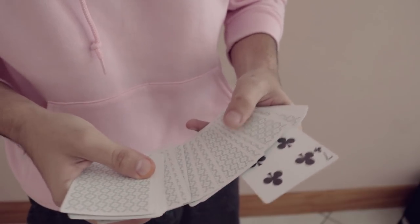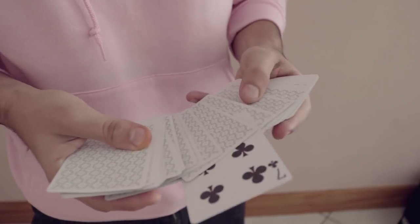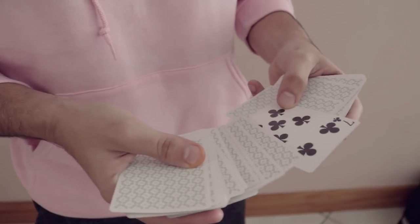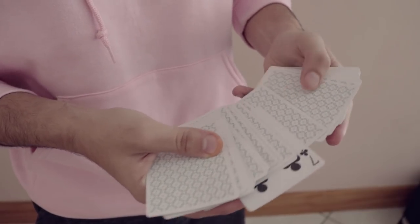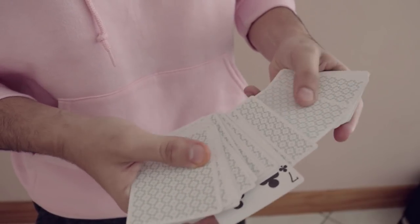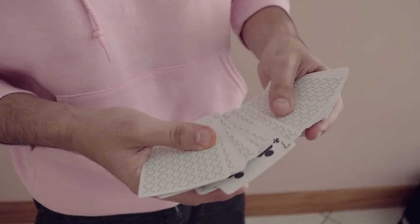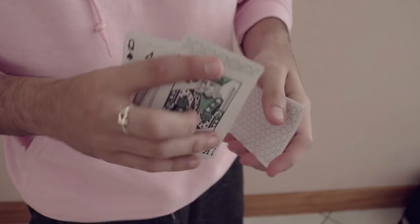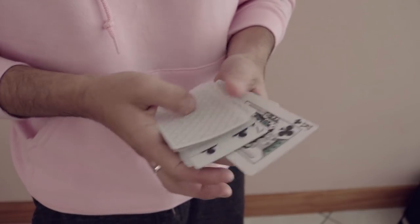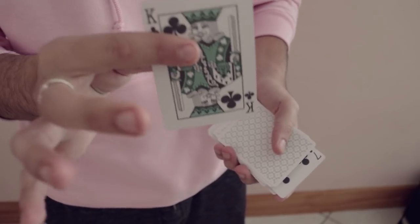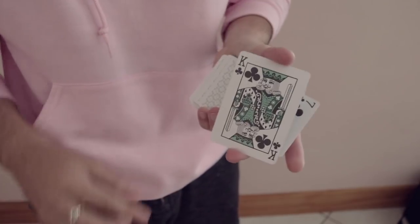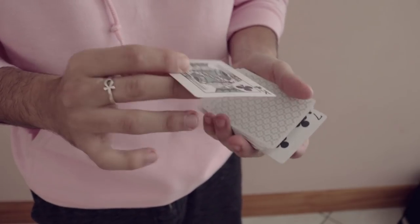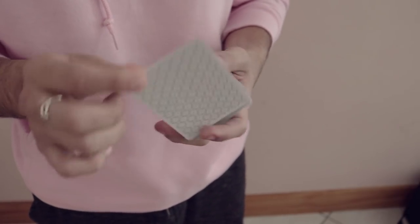Because the spectator actually did something more amazing. Believe it or not, this Seven of Clubs is going to indicate to us the position of their selected card. So over here, that's one, that's two, that's three, four, that's five, that's six, and that's seven. The seventh card from the position that they touched is the King of Clubs, the spectator's randomly selected card. Oh boy. Man, don't you love it when we have a miracle.